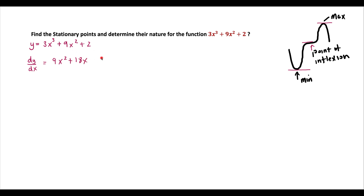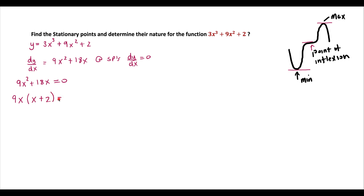Now we know that at stationary points, dy/dx is equal to 0. So this function is equal to 0. We can say that 9x² + 18x = 0. This is a quadratic, so we can factorize it. Taking out the common factor 9x, we get 9x(x + 2) = 0. So we have two x-values for the stationary points: x = 0 or x = −2.